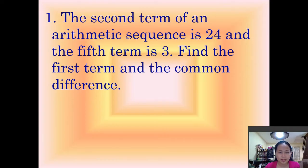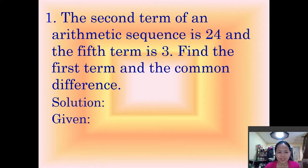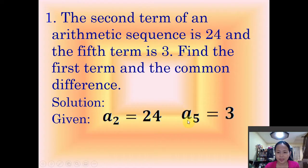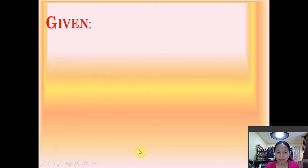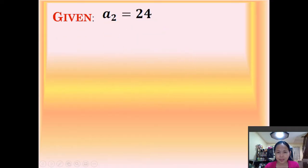Number 1. The second term of an arithmetic sequence is 24, and the fifth term is 3. Find the first term and the common difference. Take note: we are given with the second term, which is 24, and the fifth term, which is 3. We are going to look for the first term and the common difference. So we have to take note of the two given pieces of information.